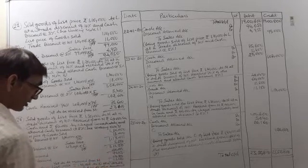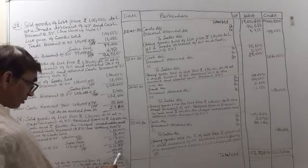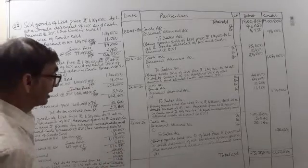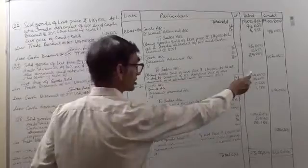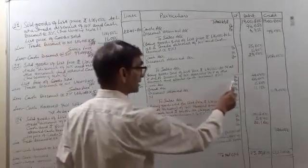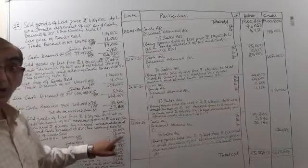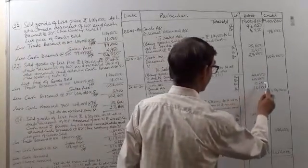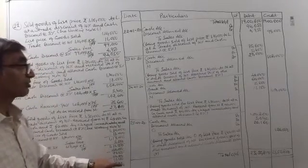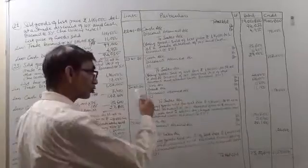We received rupees 40,000 in cash, leaving 71,150 to be received. We also received a cheque of rupees 60,000, leaving a balance of 11,150 to be received from N. So cash account will be debited 40,000, bank account will be debited 60,000, discount allowed account will be debited 5,850 as a loss, and N becomes a debtor of rupees 11,150.